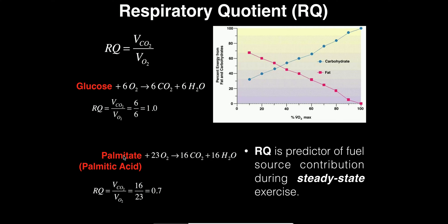There are many fatty acids — myristic acid (14 carbons), stearic acid (18 carbons) — but we're going to look at palmitic acid, a 16-carbon fatty acid and the most common fatty acid, also called palmitate. To completely catabolize palmitate through beta oxidation and other pathways, it requires 23 molecules of oxygen, and you get out 16 molecules of carbon dioxide and 16 molecules of water. Plugging the coefficients into the RQ equation: VCO2 = 16 in the numerator, VO2 = 23 in the denominator. Dividing this out gives approximately 0.7.